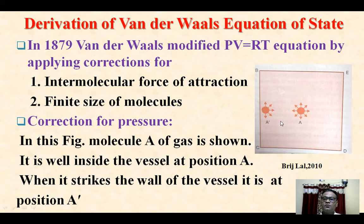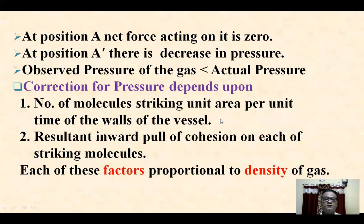Now see the molecule at position A-dash. It is near the wall of the container. It is attracted by other molecules from one side only, because there are no molecules on the other side. So only attractive forces act in the inward direction, shown by these arrows. We can say at position A the net force is zero.